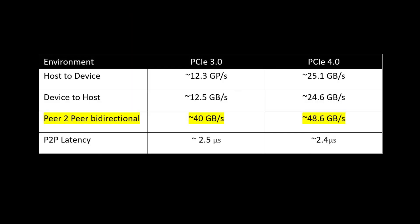We've run exactly the same procedure for the Intel Xeon server, and the test results are presented in a comparison table. The bandwidth performance under the Gen4 environment is pretty much doubled compared to the Gen3 environment. However, the latency appears to be the same for both environments.